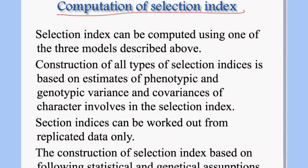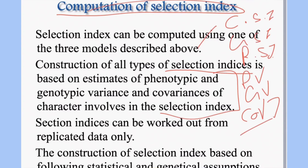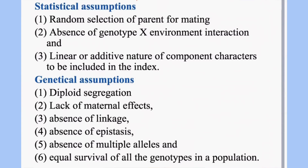Selection index can be computed using one of the three models: classical, general, or restricted. Construction of all three types is based on phenotypic variance, genotypic variance, and covariance between variables. Selection index is worked out in replicated data only and is always based on statistical and genetical assumptions. These include random selection of parents for mating — meaning the population should be a panmictic or random mating population.